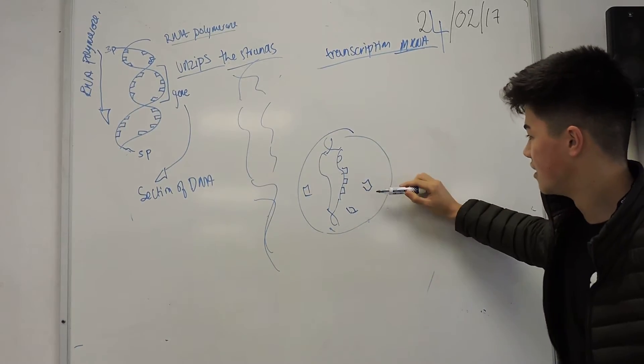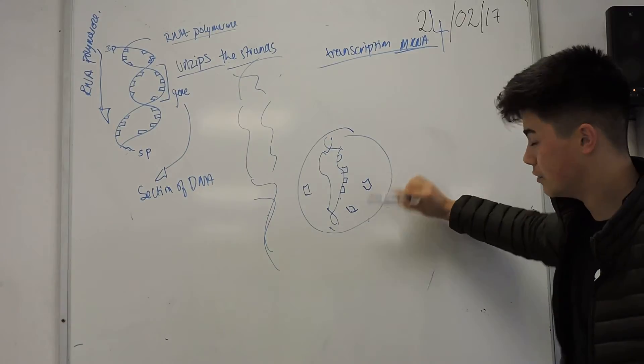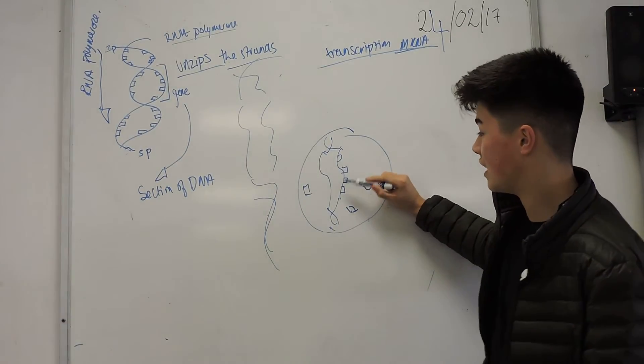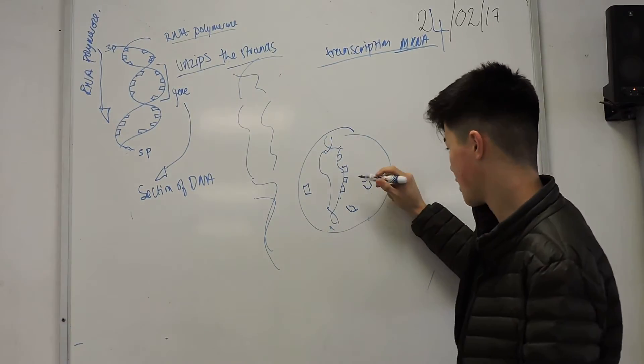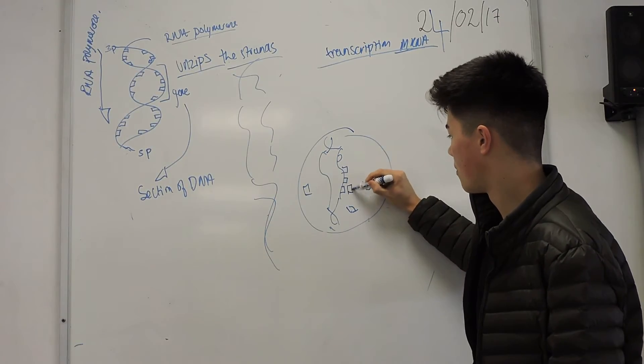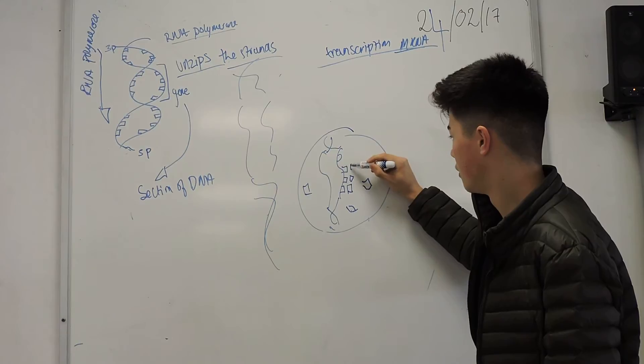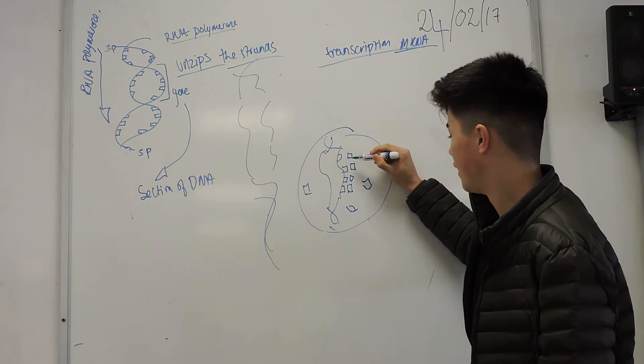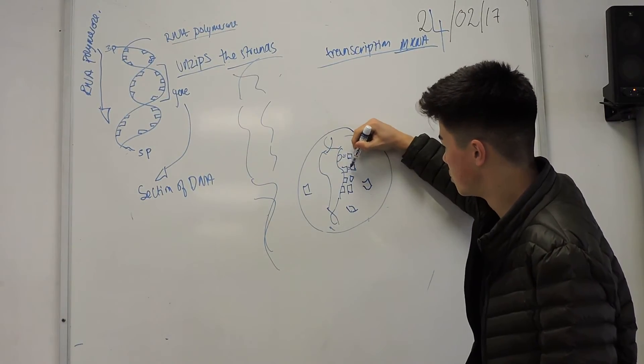These are the DNA bases, and these are the RNA nucleotides. The RNA nucleotides will come along and be attracted to the DNA bases, and they'll form hydrogen bonds like this in between.